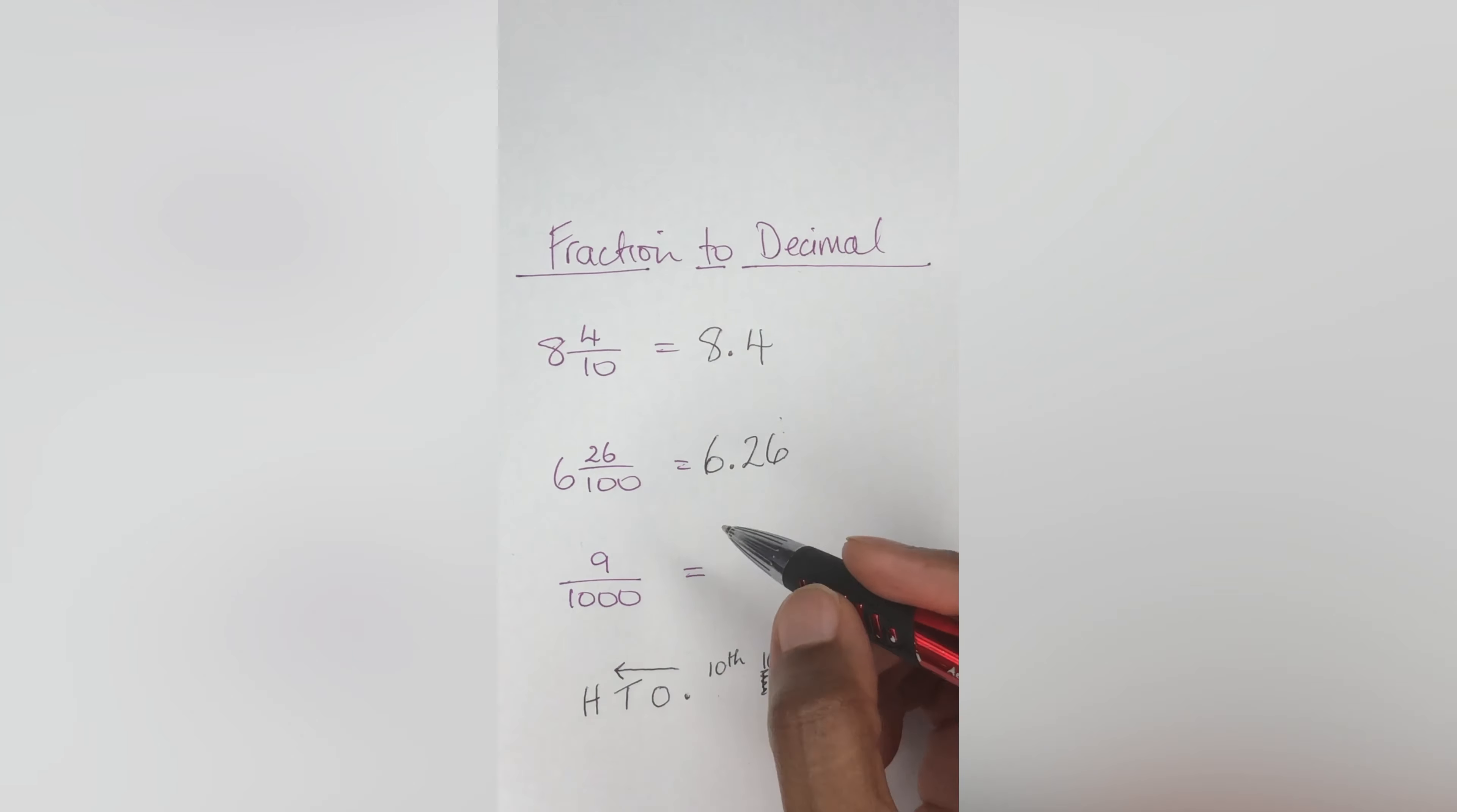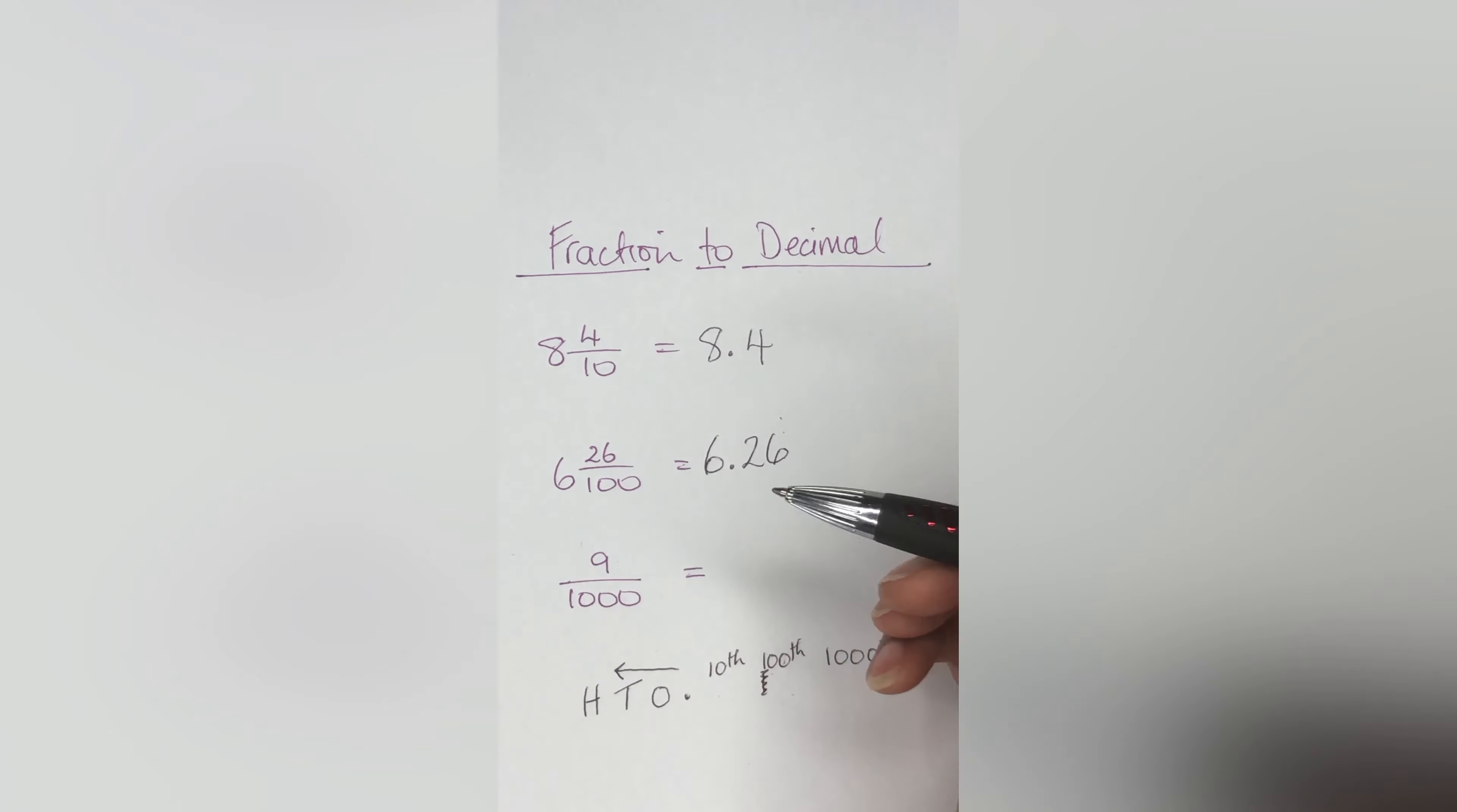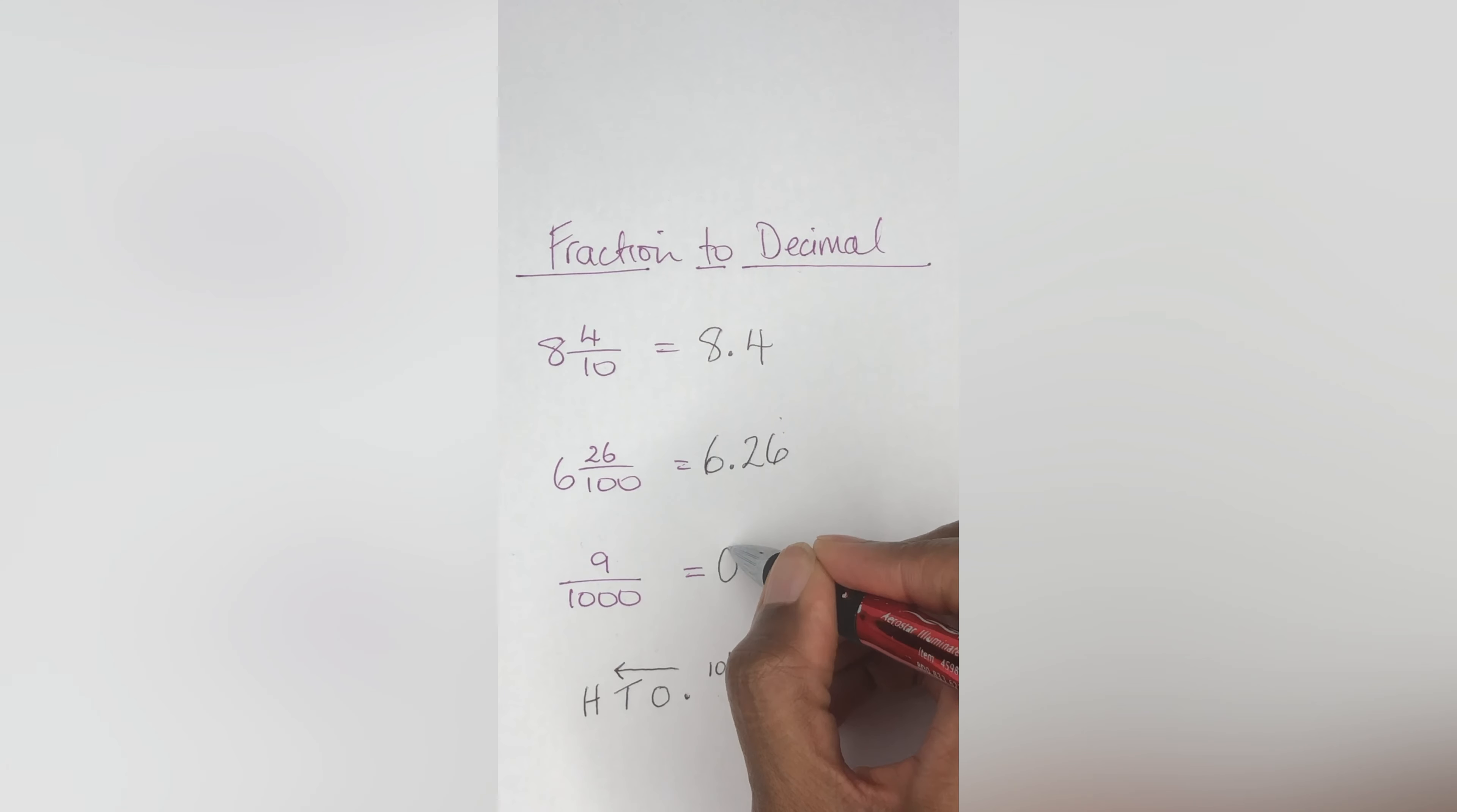Hope you're following me here. Any questions, please ask below. Let's look at the third one: nine thousandths. Now there's no whole number here, so you put a zero.